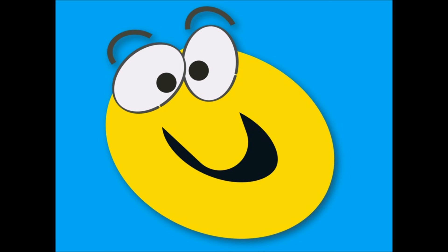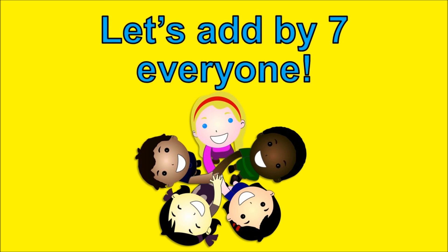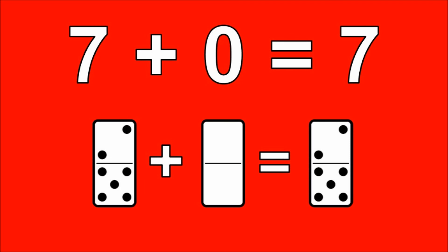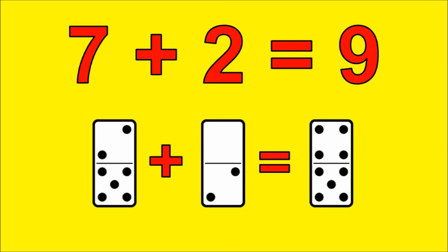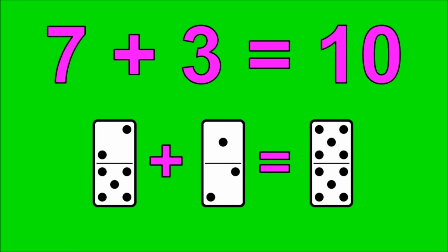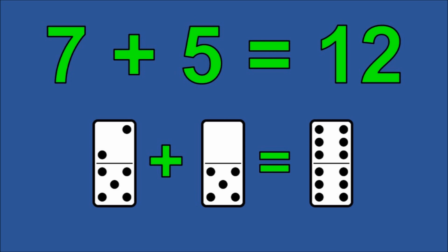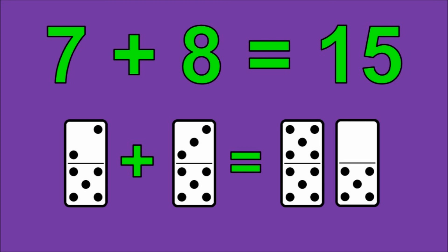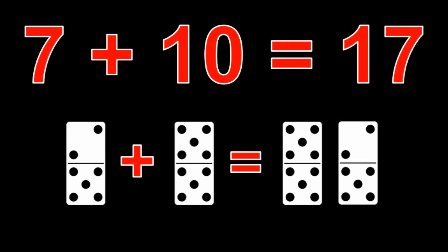Seven plus zero is seven. Seven plus one is eight. Seven plus two is nine. Seven plus three is ten. Seven plus four is eleven. Seven plus five is twelve. Seven plus six is thirteen. Seven plus seven is fourteen. Seven plus eight is fifteen. Seven plus nine is sixteen. Seven plus ten is seventeen.